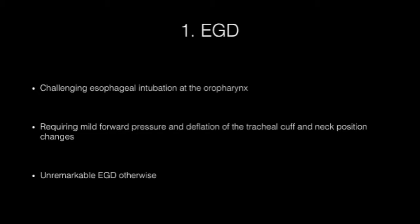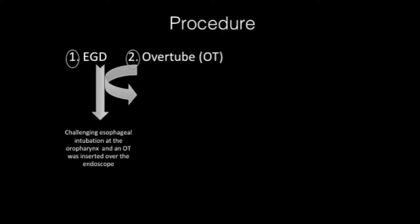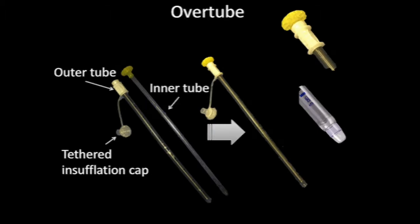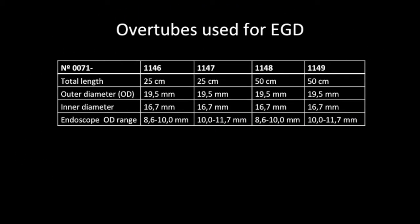For this reason, the ecoendoscope was removed and a gastric overtube was placed onto the oropharynx and through the esophagus under direct visualization with the adult endoscope.